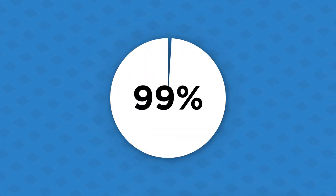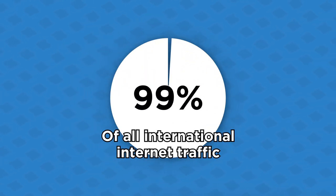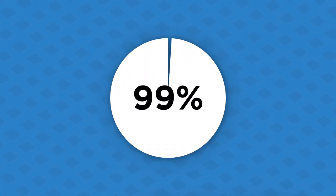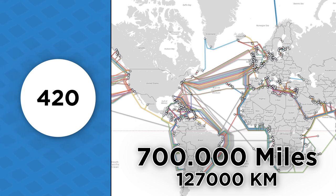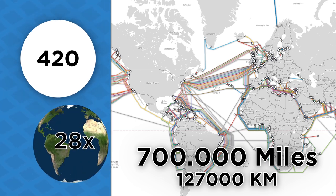This begs the greater question as to just how many of these cables exist and how dependent is the world wide web on this underwater infrastructure. Today, over 99% of all international internet traffic is routed through a network of over 420 submarine cables in service, stretching over 700,000 miles around the world.